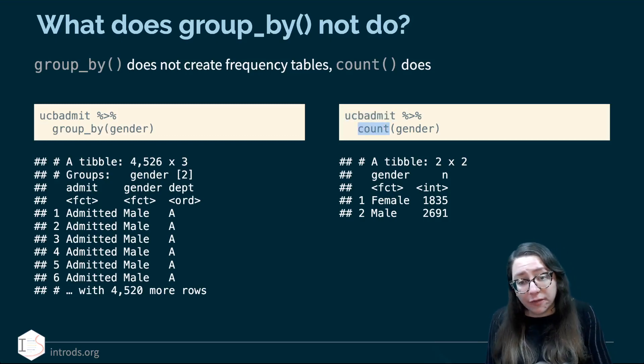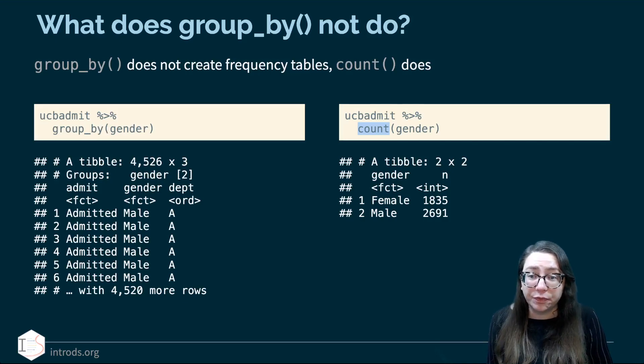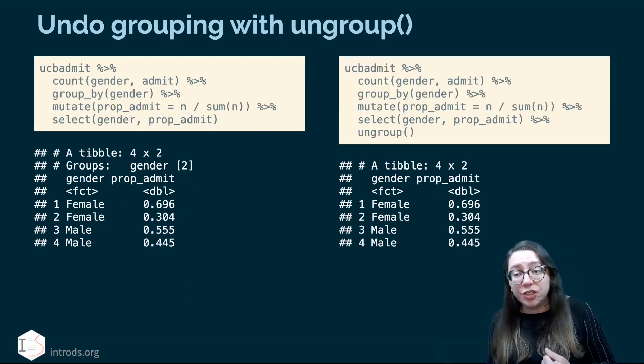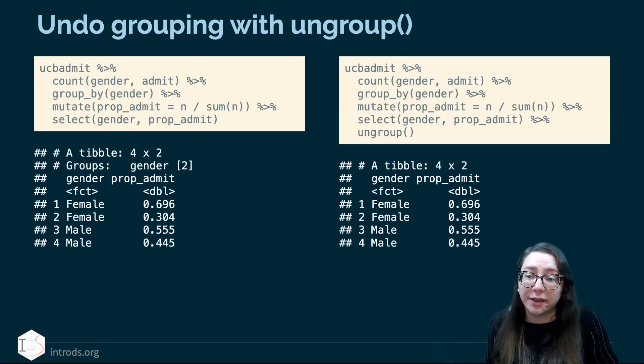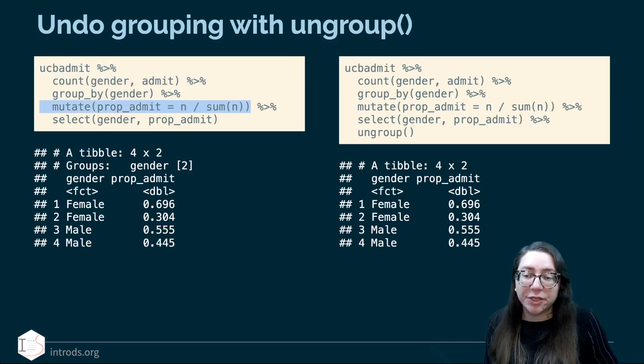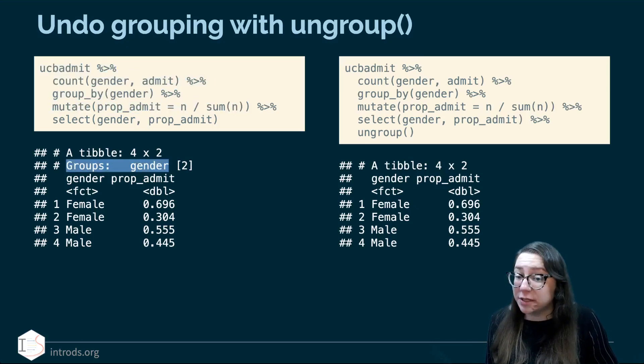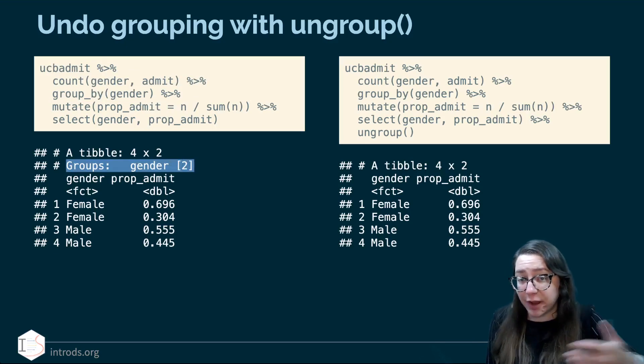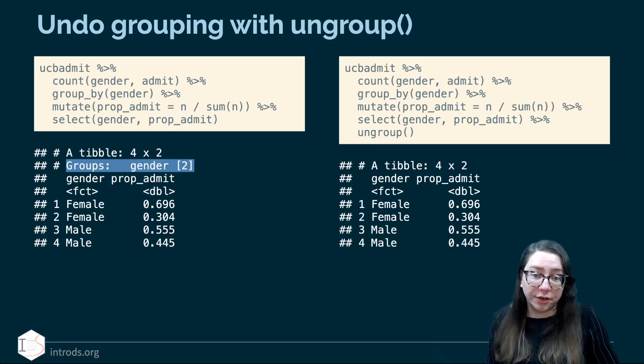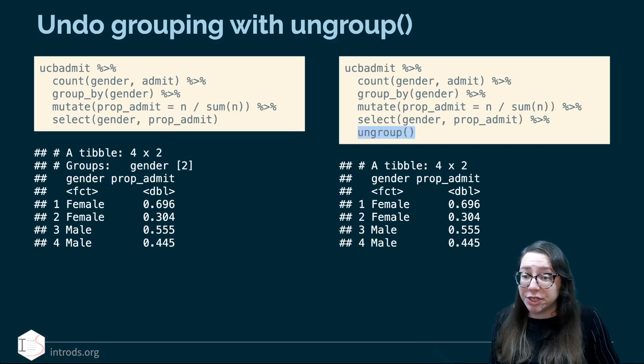GroupBy also does not create frequency tables. Count does that. So if you actually want to take your raw data frame and turn it into a frequency table to count the number of occurrences of particular levels of a categorical variable, you would use Count. And when we have grouped data, we can then undo the grouping using the function ungroup. So here is how I had calculated the proportions of admissions for males and females overall. But we can see that in order to be able to calculate that earlier, we said we're going to group the data by gender, and then we're going to calculate this proportion, and our resulting data frame is still grouped. So if I was to do more operations on this data frame, they would also happen once per group for each of the genders. If I don't want that to happen, then I can say and specifically ask for the data to be ungrouped. It doesn't change the presentation of the data, but it does change subsequent behaviors because this particular data frame is not grouped anymore.